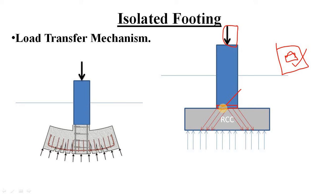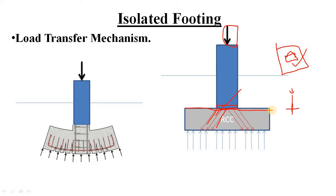The load is then dispersed or distributed outward — follow the red arrows. This is why the area of the footing is larger than the column. Otherwise, without that larger area, the column would simply punch down through the soil. We reduce the punching effect by providing a large area so the load is distributed over a larger region.